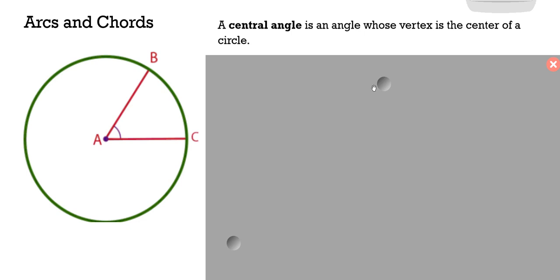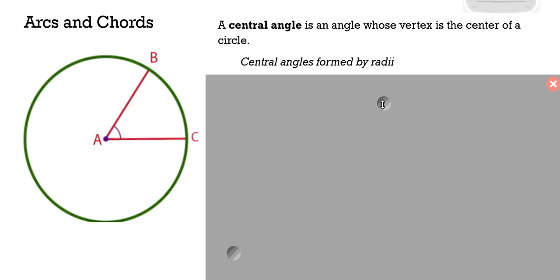It's an angle whose vertex is the center of a circle. You can also look at it as any angle formed by radii, the radii of a circle. We've got formed by radius AB and AC, and we still call it angle BAC or reverse it, but you have to make sure that the vertex is in the middle.